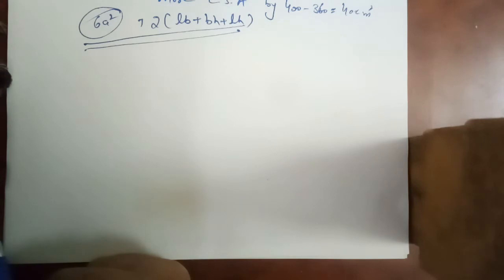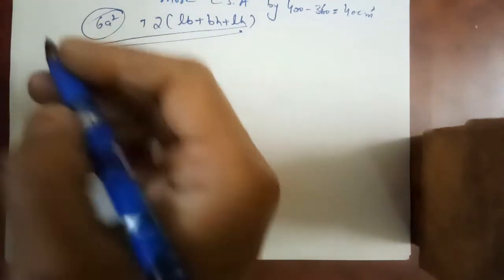Here the question number 9th of unit arithmetic progression exercise 5.3. If the sum of first 7 terms of an AP is 49 and that of 17 terms is 289, find the sum of first n terms.